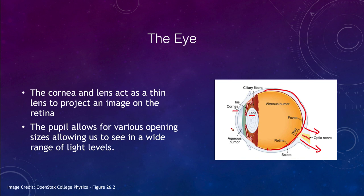In the front, you have the pupil, which allows for various opening sizes, letting us see in a different range of light levels. Your pupil will open very wide when it's dark, letting lots of light in. It closes down when there's bright light to keep too much light from getting into your eye. Some animals have the ability to change how much their pupil is open even more, making them better able to see in the dark.